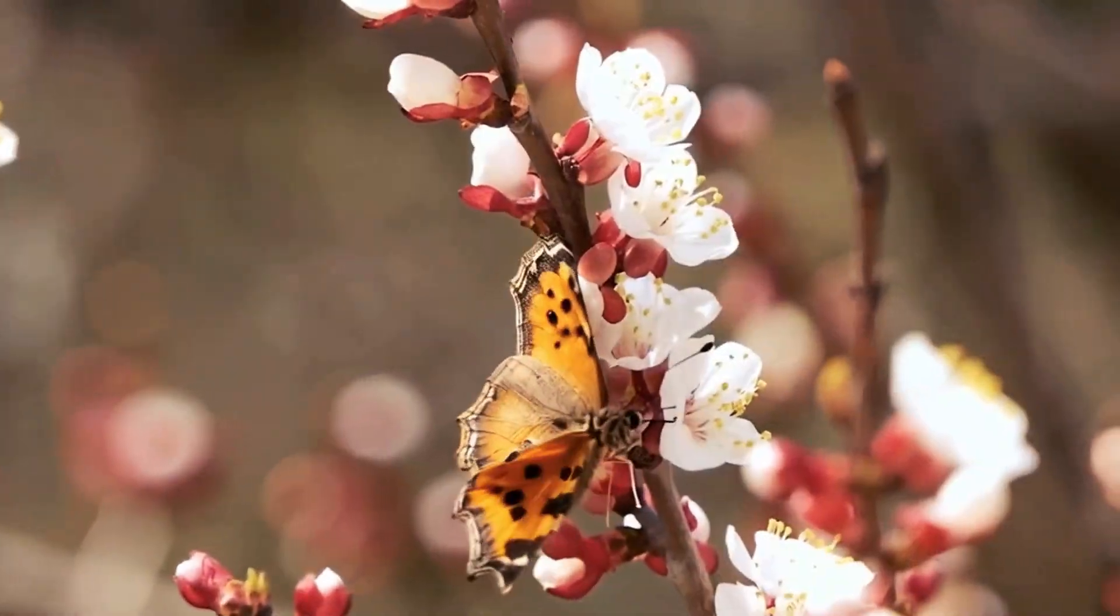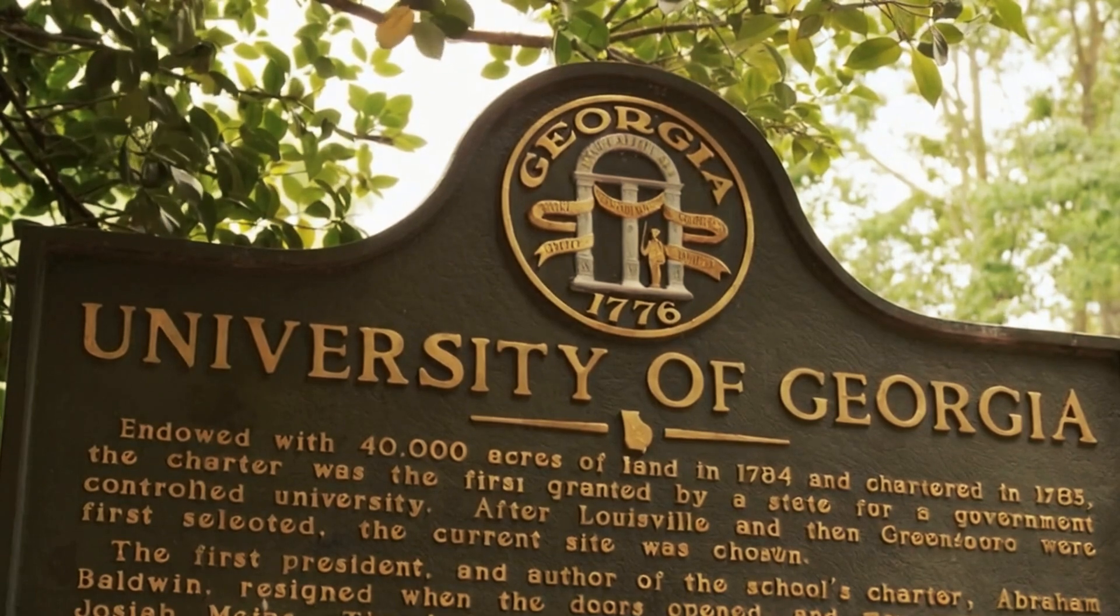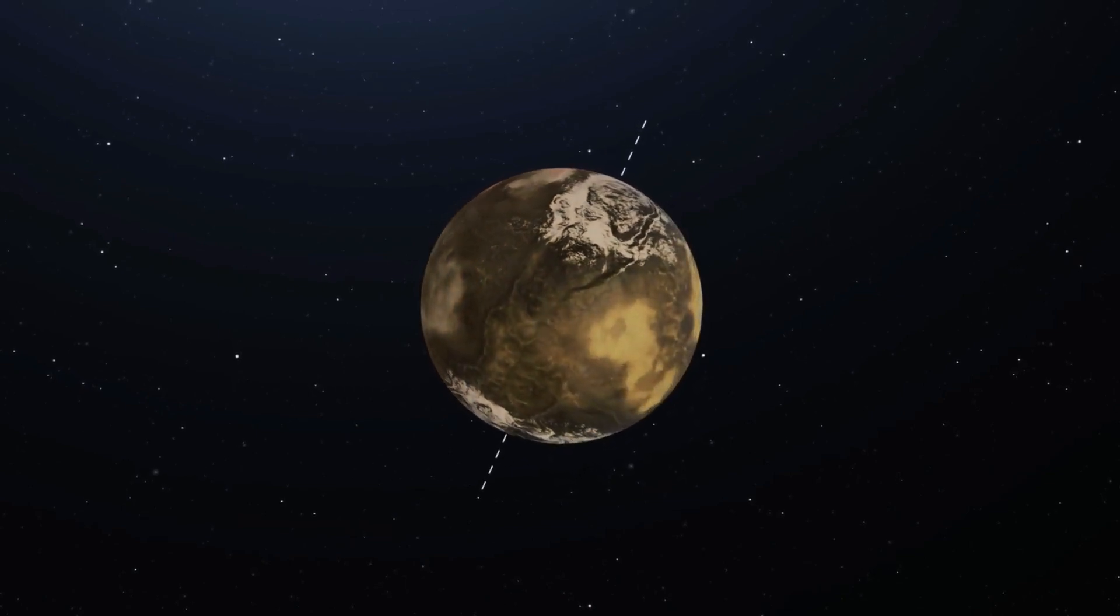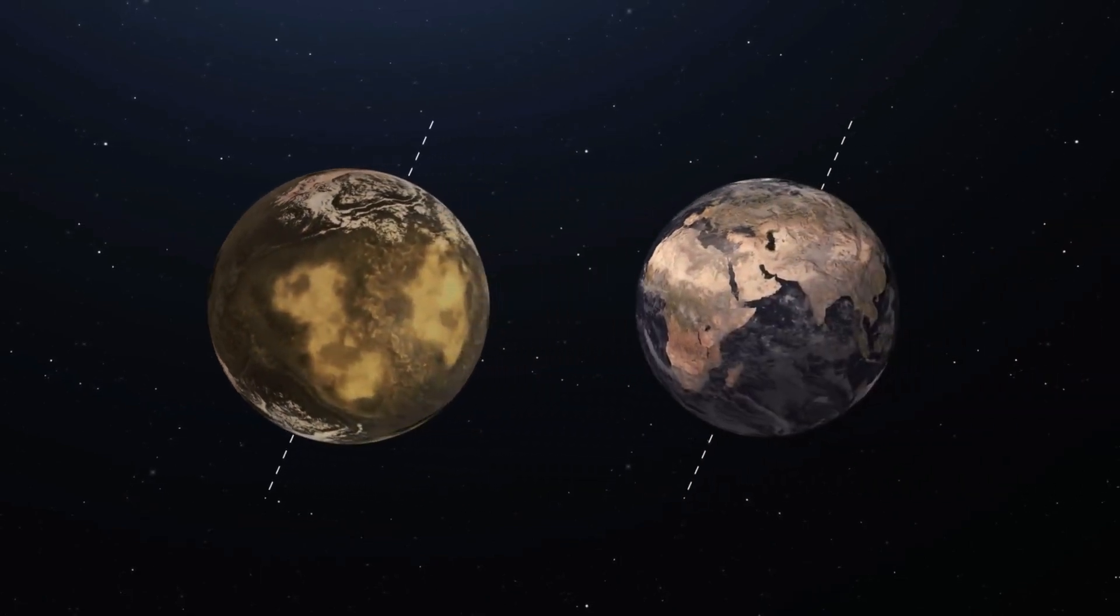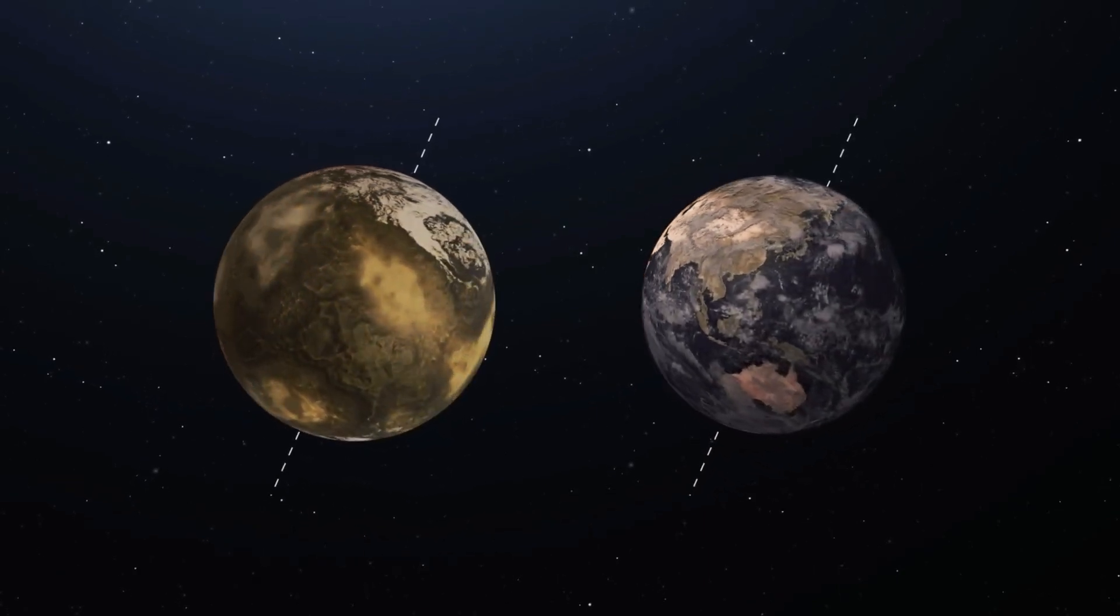New research out of Georgia Tech University has analyzed the planet's spin and axial tilt and found that its tilt is stable like Earth's, which makes it likely that Kepler-186f also has regular seasons and a stable climate.